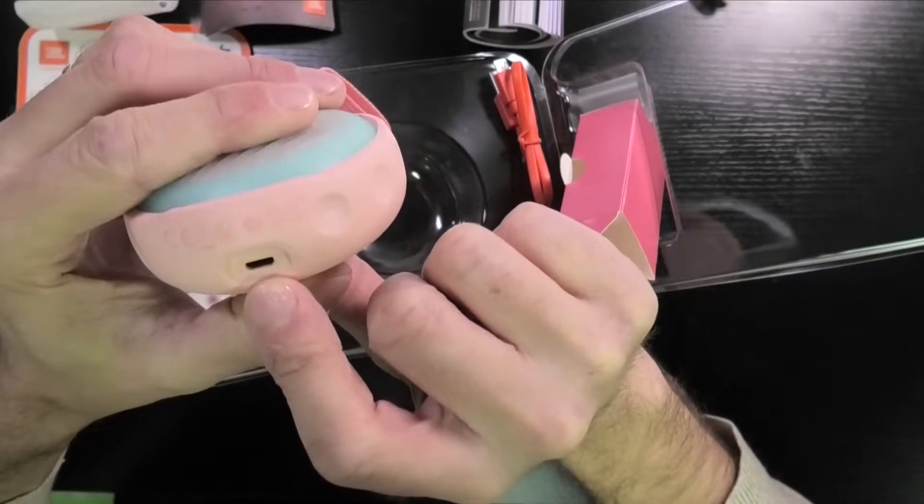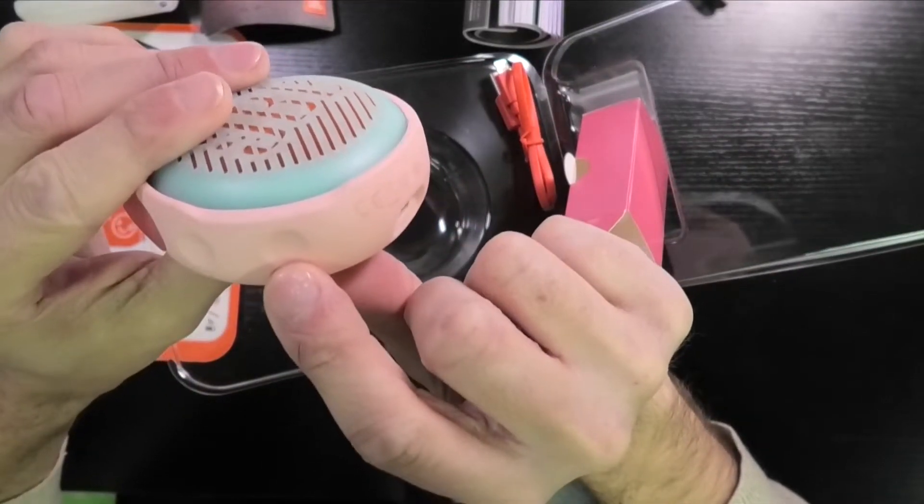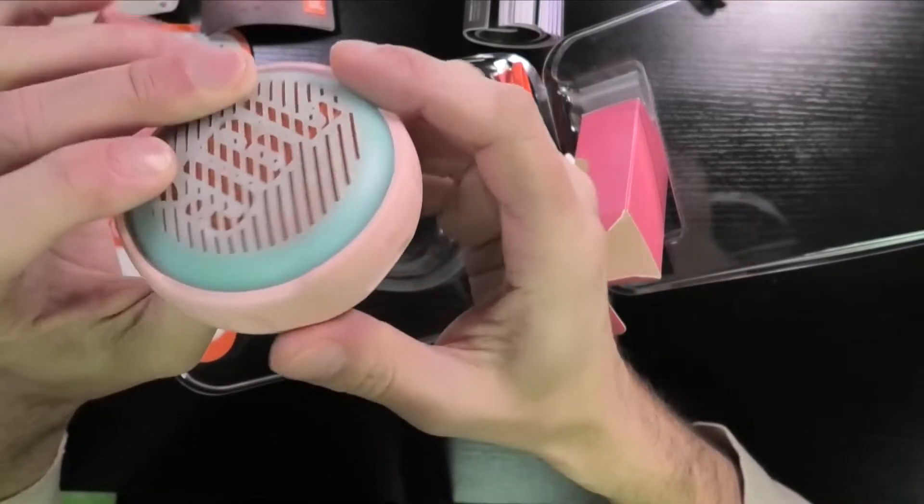Then here is the USB charging port to charge the battery. And then we have the plus and minus buttons here to change the volume on the speaker.